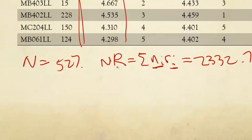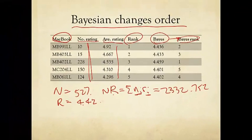So the average rating, therefore, is about 4.42. If you look at these five MacBooks without computing any Bayesian numbers yet, you see that this one's ranked number one by average, simple average, and this one's number two, but they each got only 10 or 15 ratings.